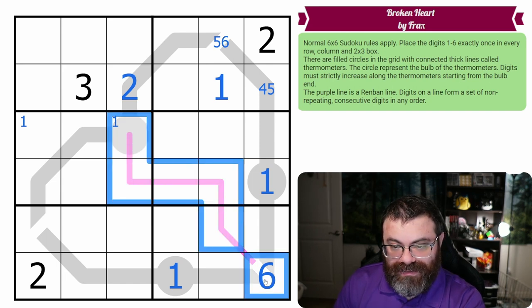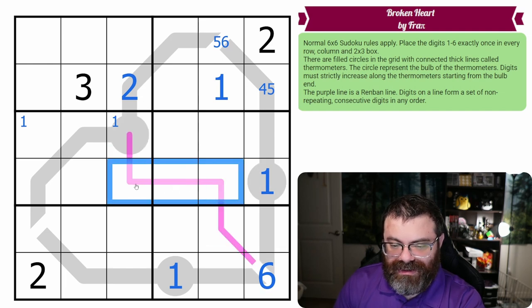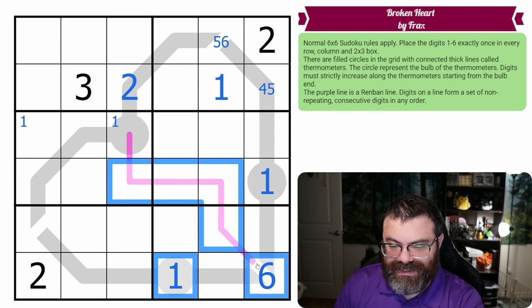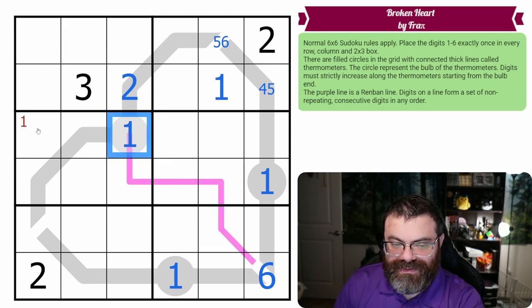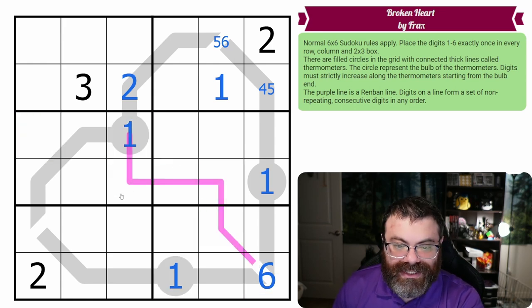Oh, we need a one on this Renban, and these can't be one, this can't be one. So the one is - yeah, and then this can't be one. This one sees all three of these, and this one sees these two. So the one on this Renban goes there, in a non-surprising place.